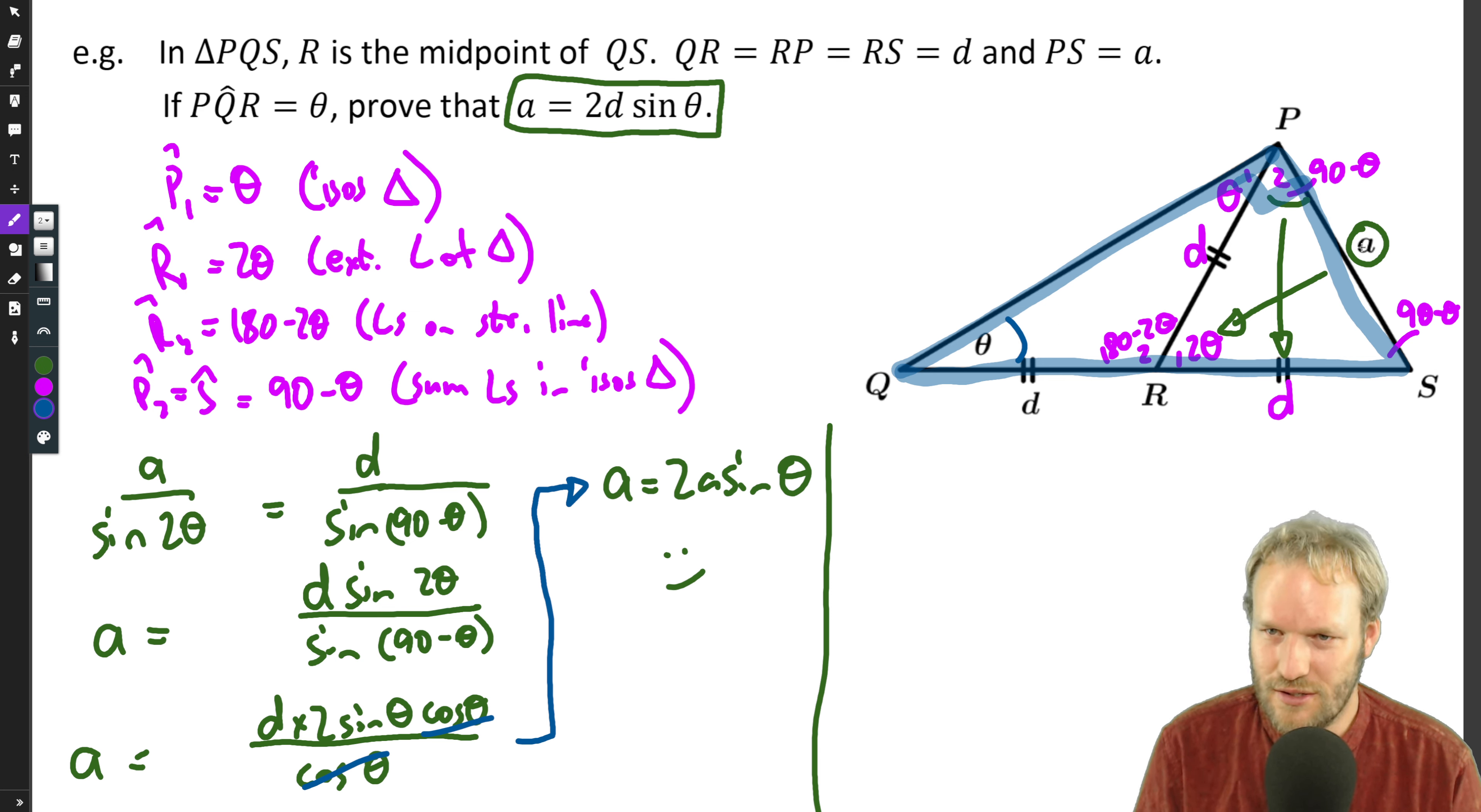Well, a is opposite and the hypotenuse is 2d. So sine of theta is opposite over hypotenuse, times both sides by 2d. Now we didn't need our double angles after all, because we're done in a whole lot fewer steps. Try and spot it. It saves you a bit of time and energy. I'll see you in the next one.